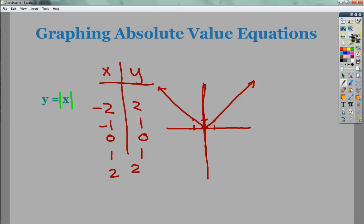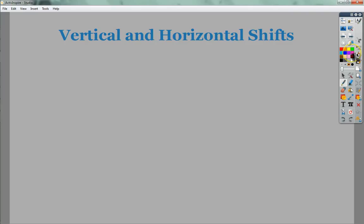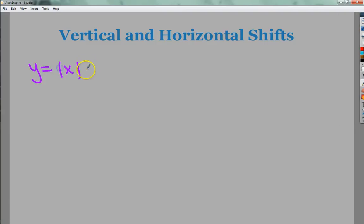From here we need to look at some of the possible transformations. One of the transformations would be vertical and horizontal shifts or translations, whatever you want to call them. These come in two flavors visually. You have that type, and then I have this type. In the first one, y equals the absolute value of x plus 2.